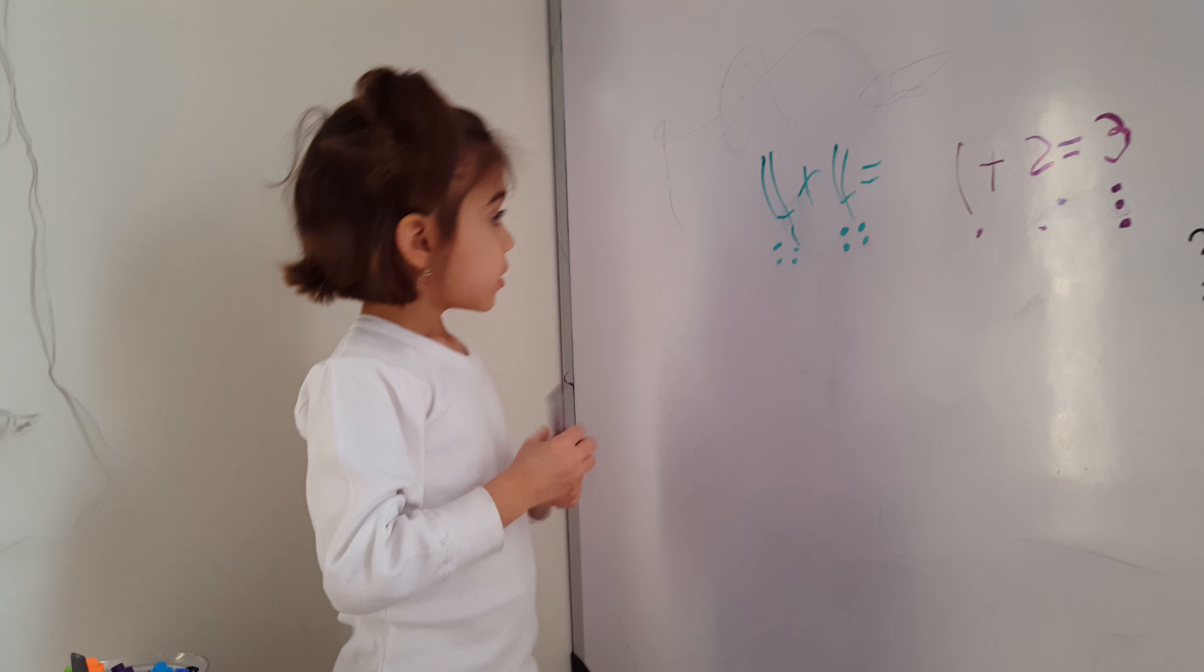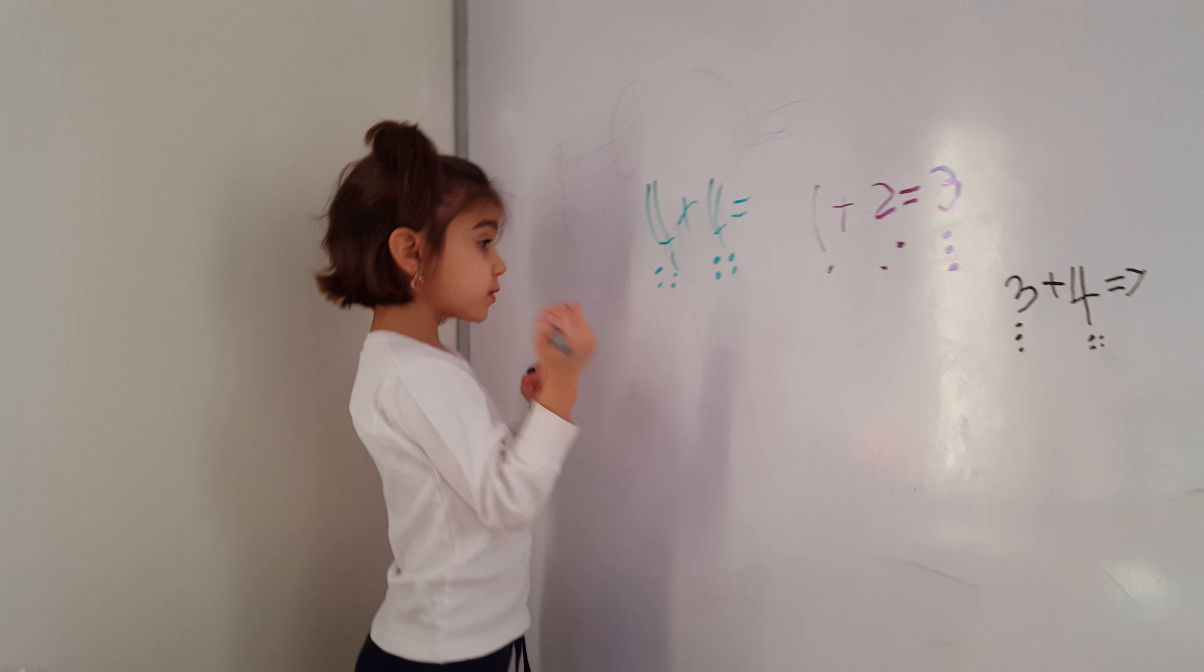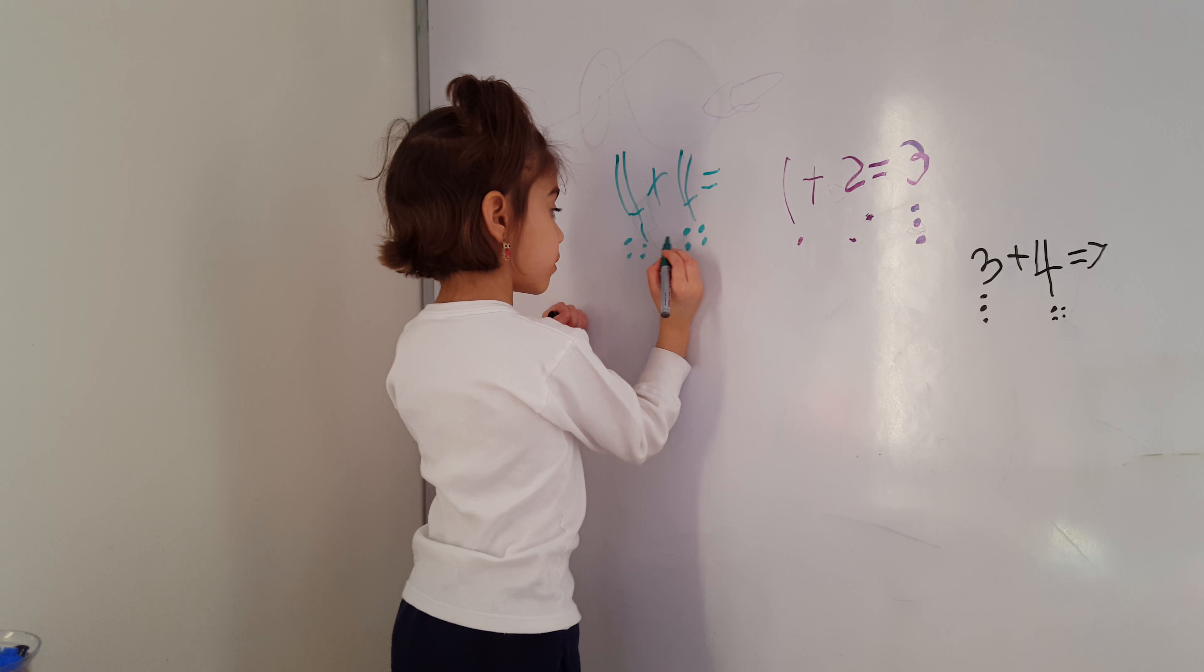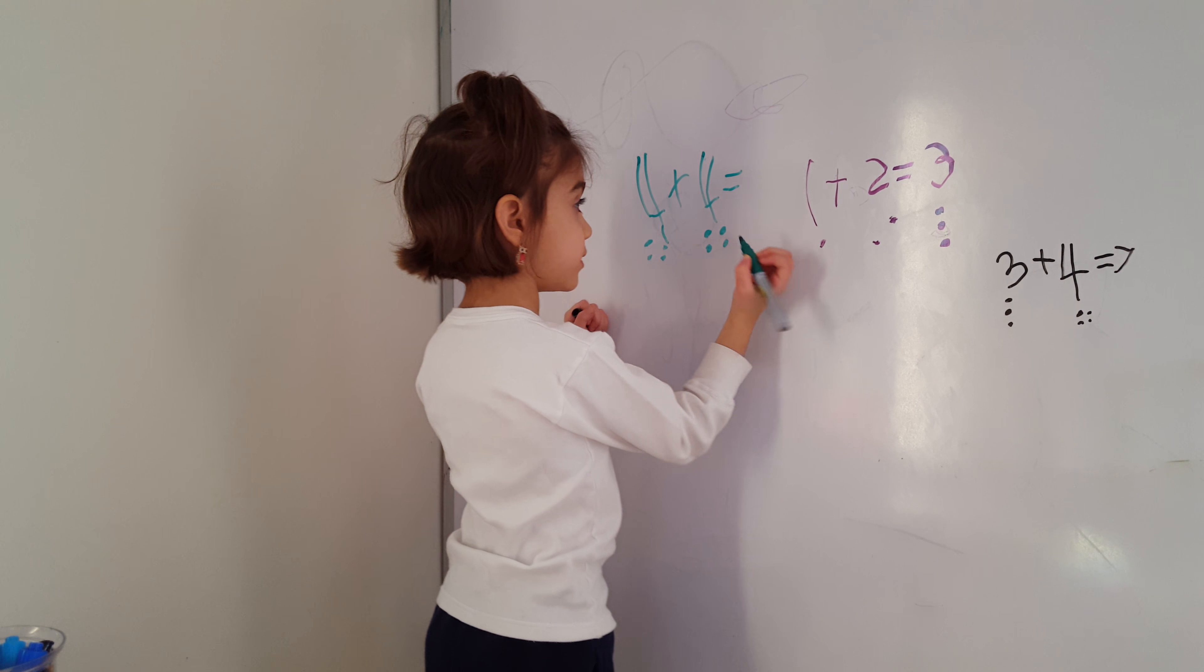Let's finish this problem. So 4 plus 4 is 1, 2, 3, 4, 4, 5, 6, 7, 8.